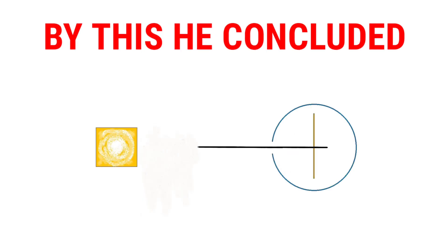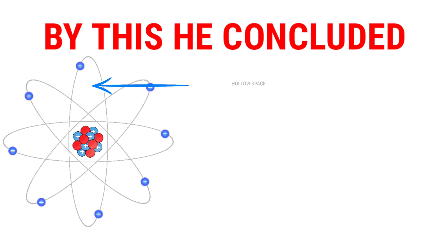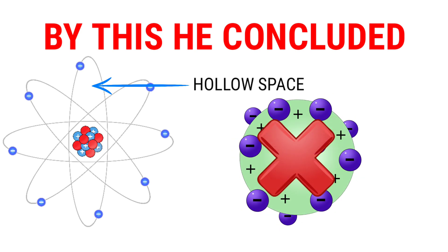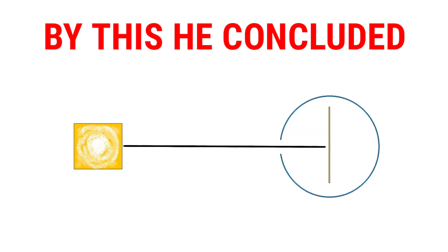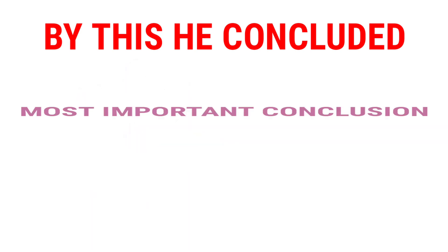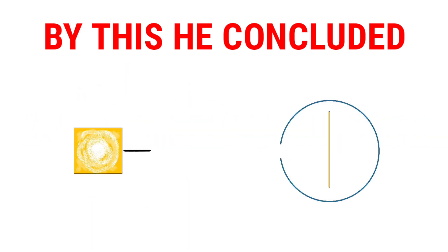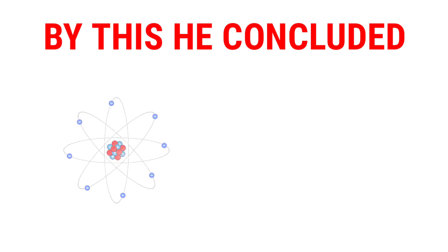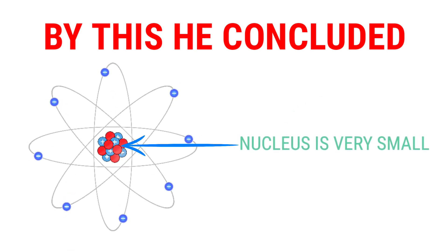By this, he concluded that as most of the alpha particles went uninterrupted, atoms consisted of hollow space and were not a positive dense sphere. As some of the alpha particles were deflected or repelled, he said that atoms had positive centers which repelled positive alpha particles. The most important conclusion was that very few alpha particles were deflected by an angle more than 90 degrees. He assumed the central nucleus to be very small compared to the atom and to contain almost all mass of the atom.